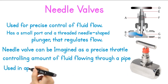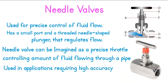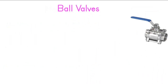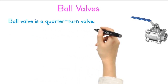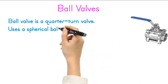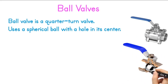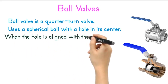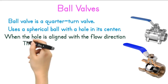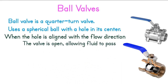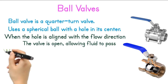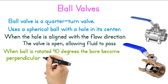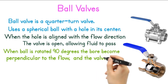Needle valves are often used in applications requiring high accuracy. Ball valves. A ball valve is a quarter-turn valve that uses a spherical ball with a hole, called a port, through its center to control the flow of liquids. When the hole is aligned with the flow direction, the valve is open, allowing fluid to pass. When the ball is rotated 90 degrees, it becomes perpendicular to the flow and the valve is closed.